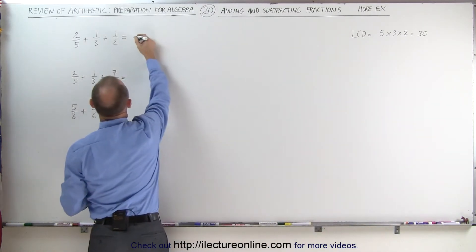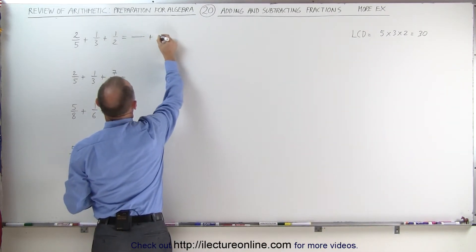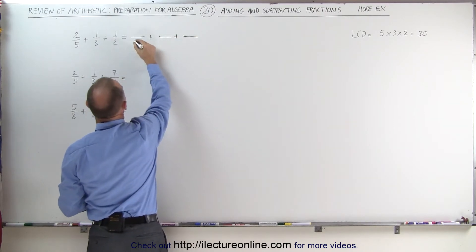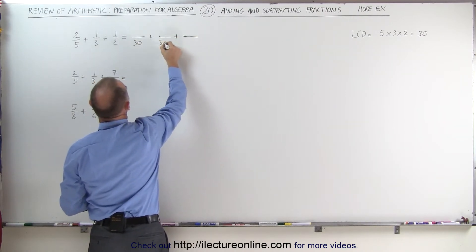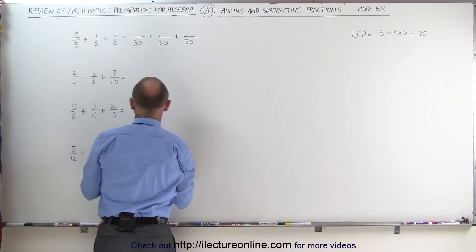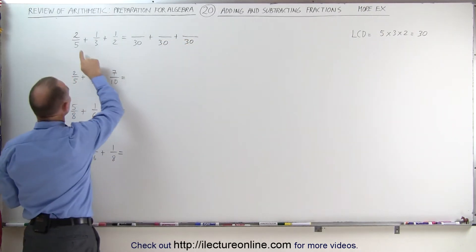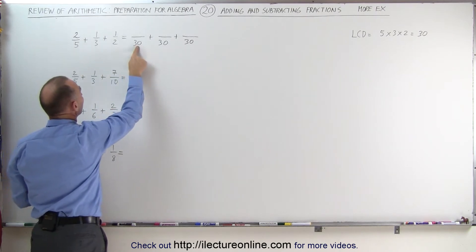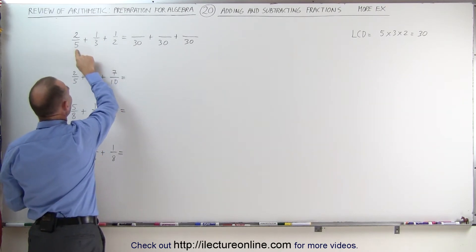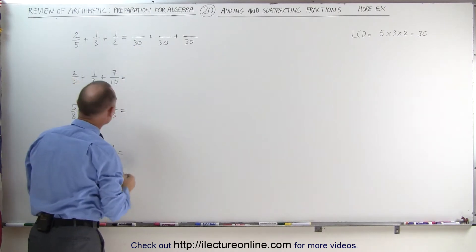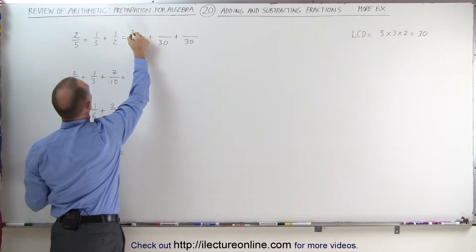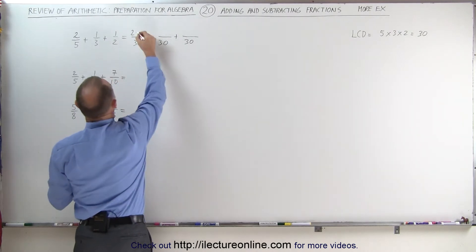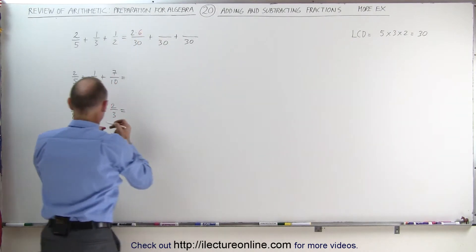Which means we're going to write the fractions with the new denominators. They all will have the common denominator of 30, 30, and 30. The question now is: what did I have to do to the denominator 5 to turn it into 30? I have to multiply 5 times 6 to turn it into 30, which means we also have to multiply the numerator times 6.